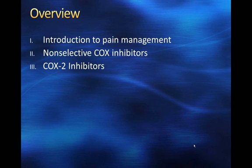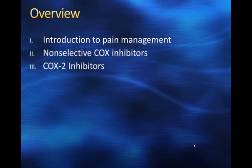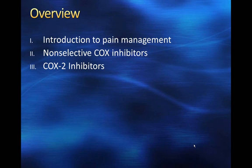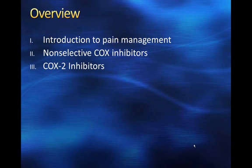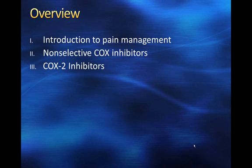I want to first introduce you to the idea of pain management and some of the best ways to view pain management. We'll talk about what are called non-selective COX inhibitors, which are the over-the-counter drugs you're familiar with: aspirin, ibuprofen, acetaminophen, naproxen sodium. Then we'll talk about what are called COX-2 inhibitors — there's really only one on the market currently, available by prescription, which is Celebrex. We'll also talk about ginger as a potential COX-2 inhibitor as well.